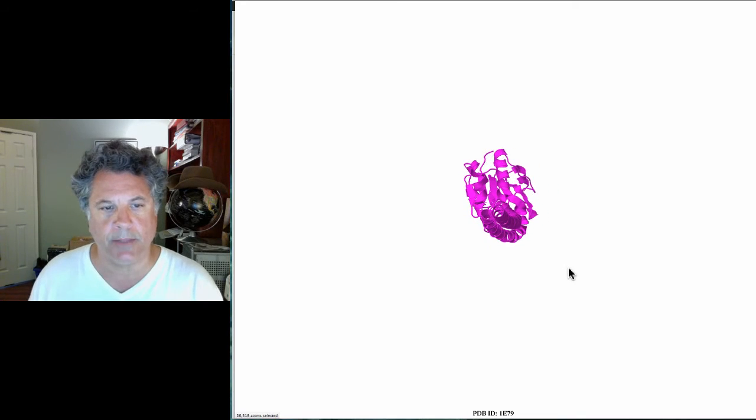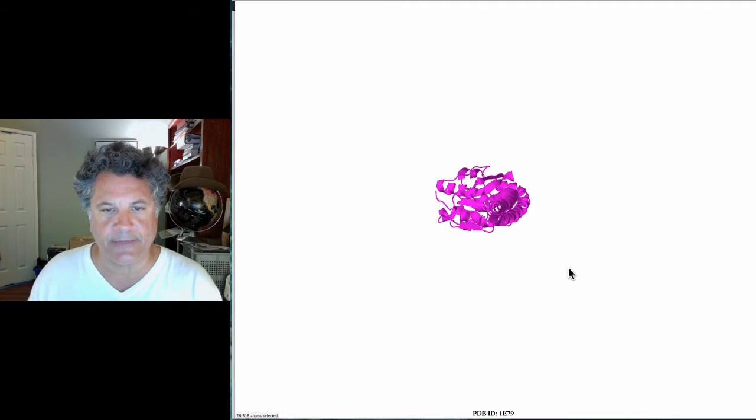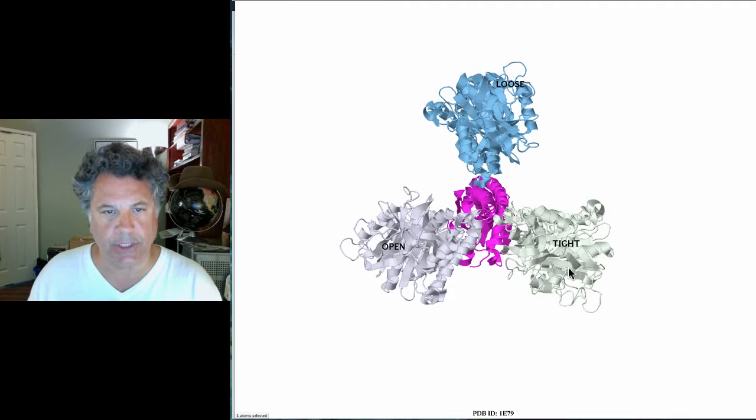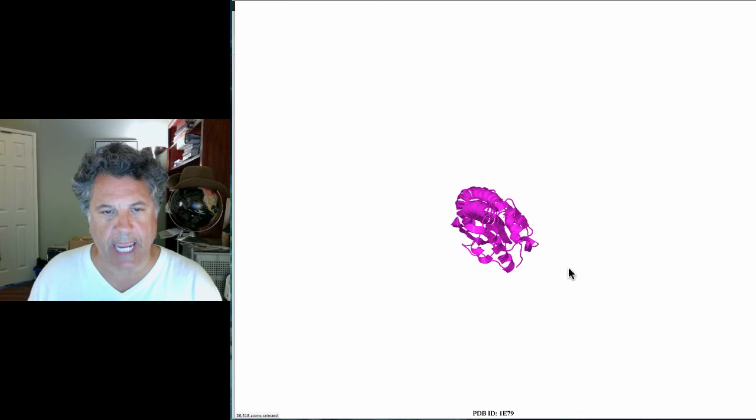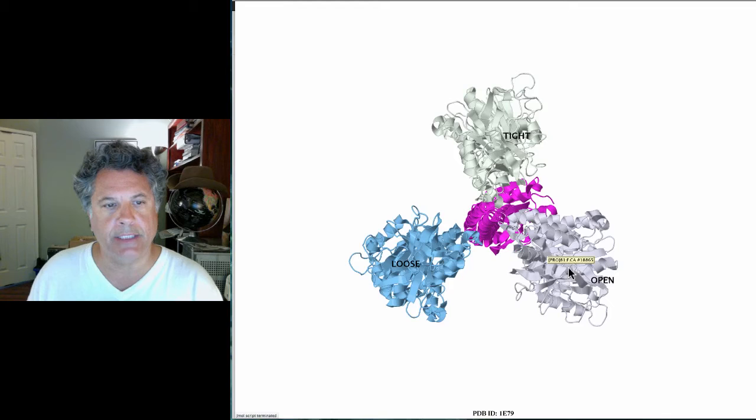Those transitions correspond to the binding of ADP and inorganic phosphate, the catalysis of ATP phosphorylation, phosphorylating ADP to make ATP, and then the release of ATP into the matrix.